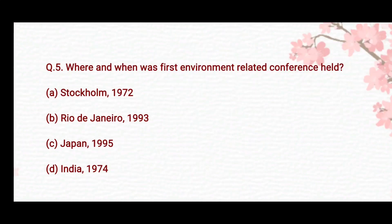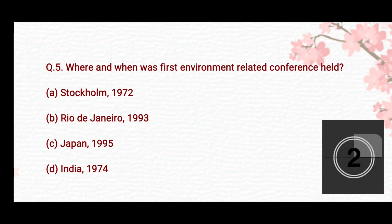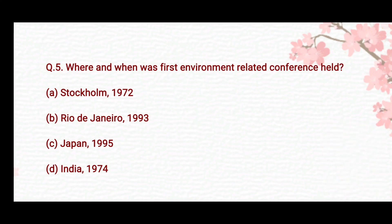Where and when was the first environment-related conference held? Option A: Stockholm in 1972. Option B: Rio de Janeiro in 1993. Option C: Japan in 1995. Option D: India in 1974. The right answer is Option A — Stockholm in 1972.